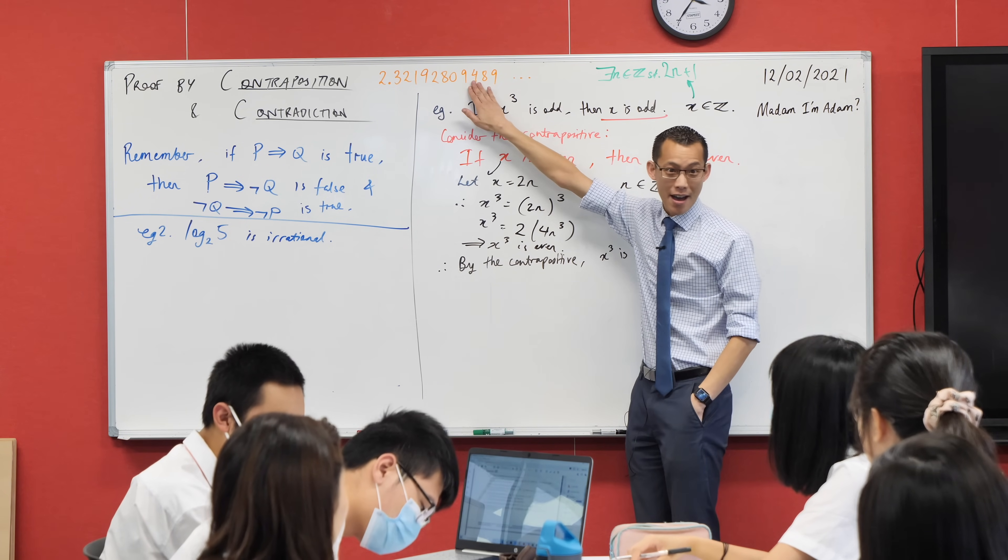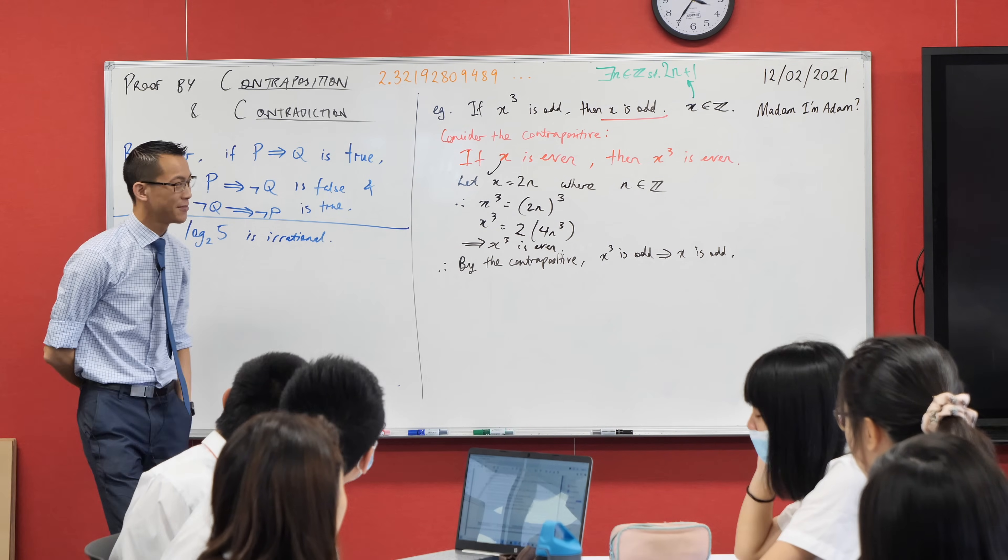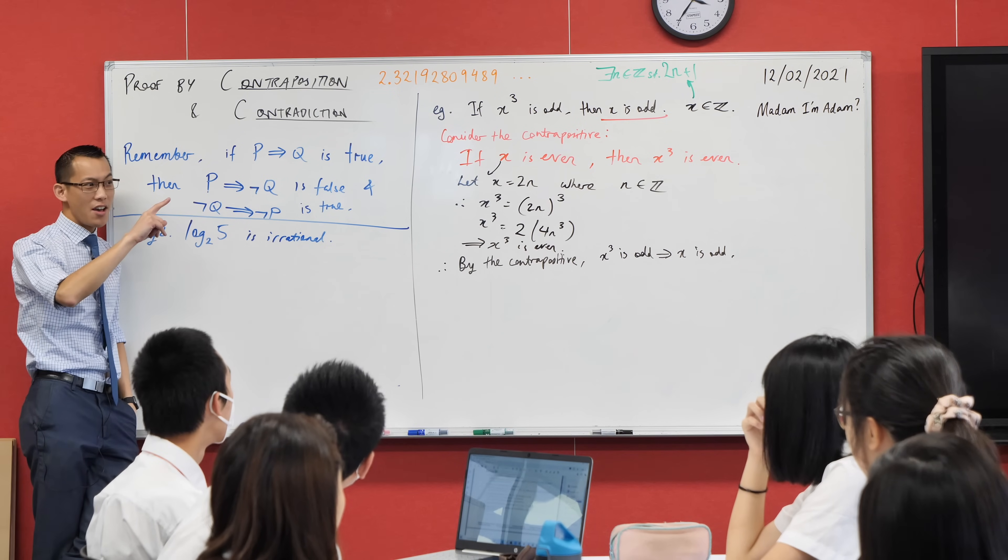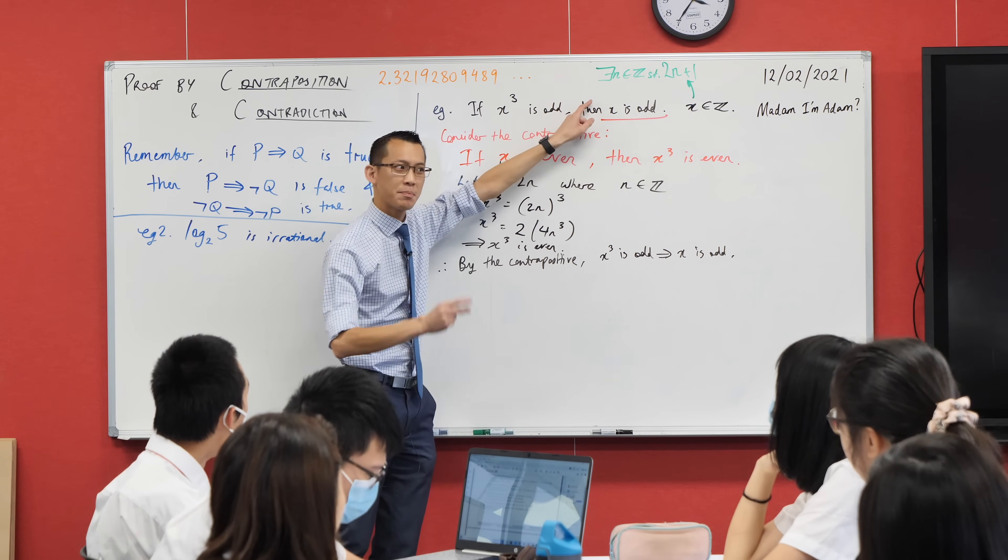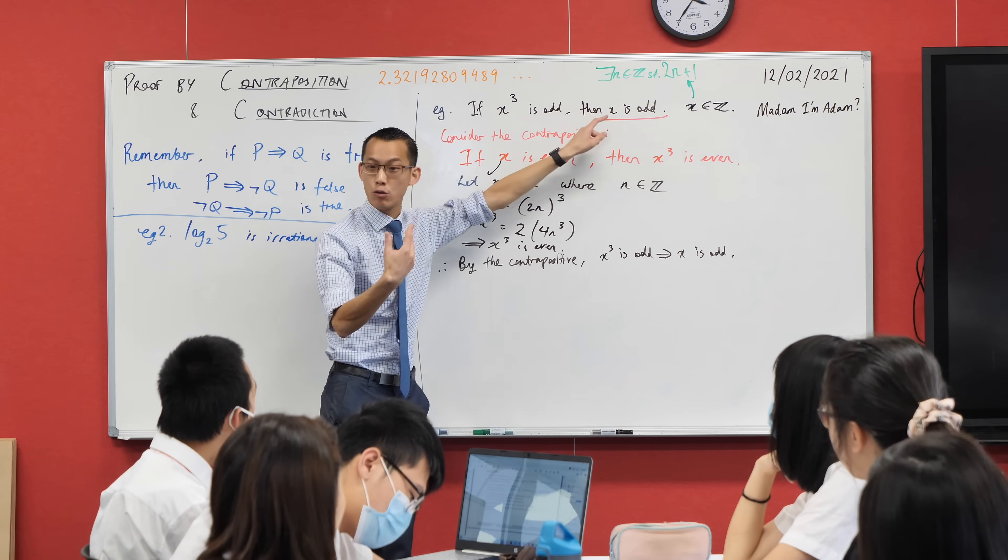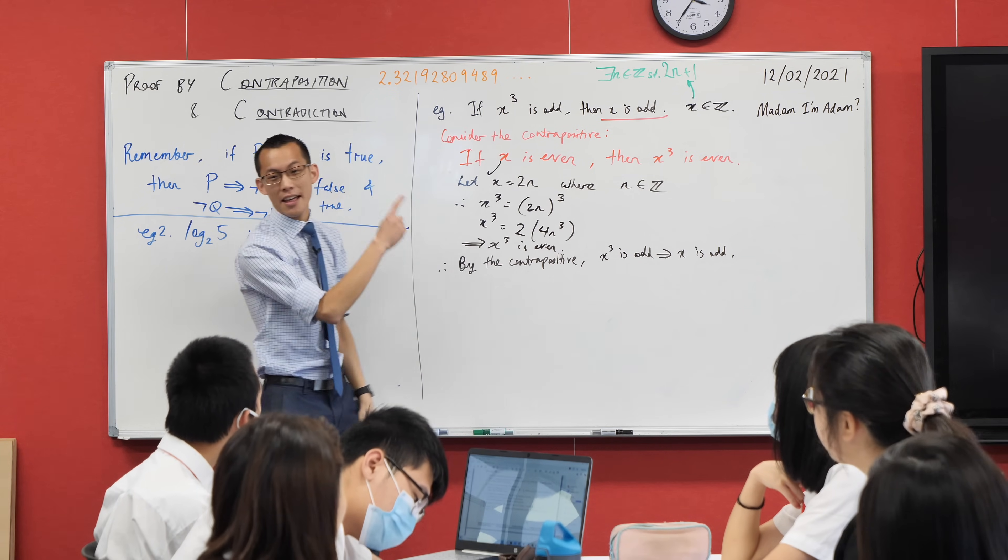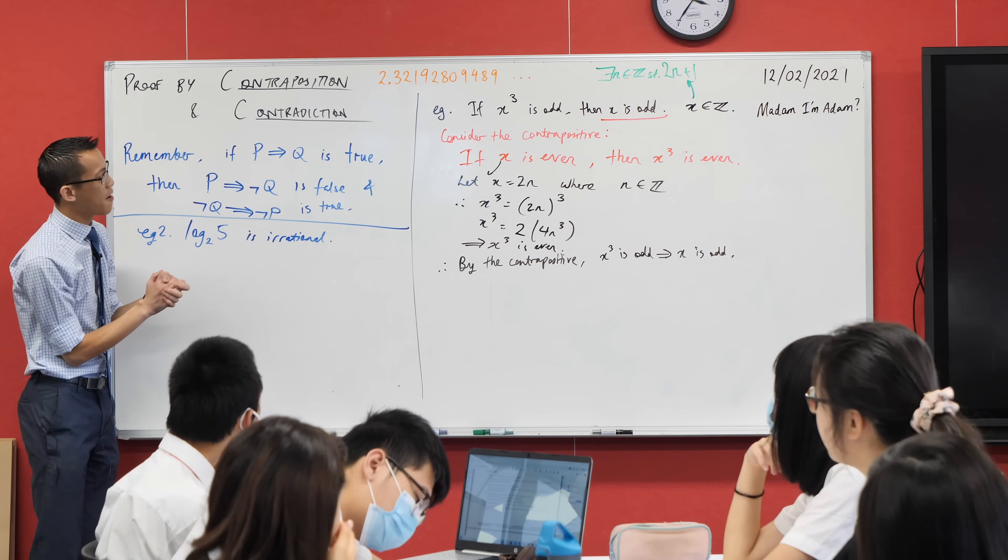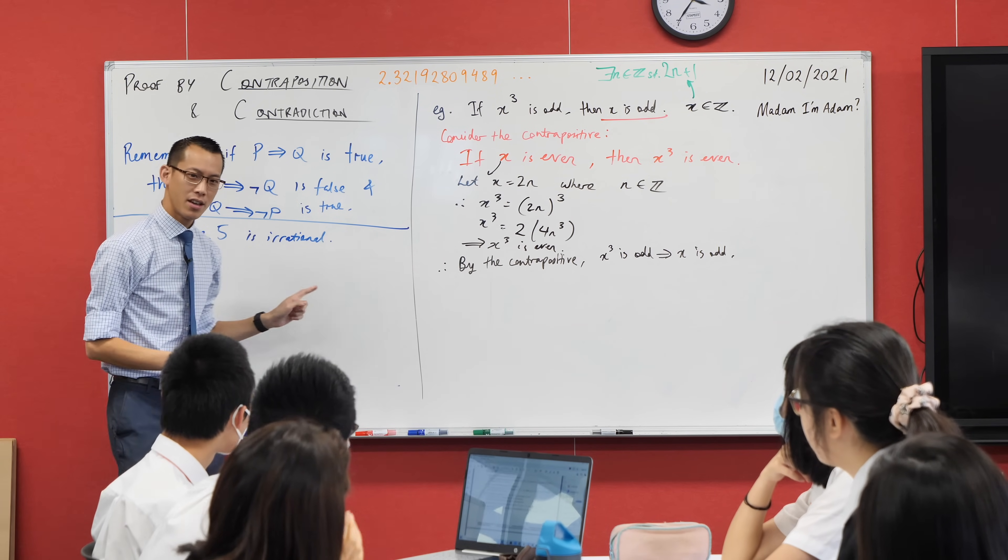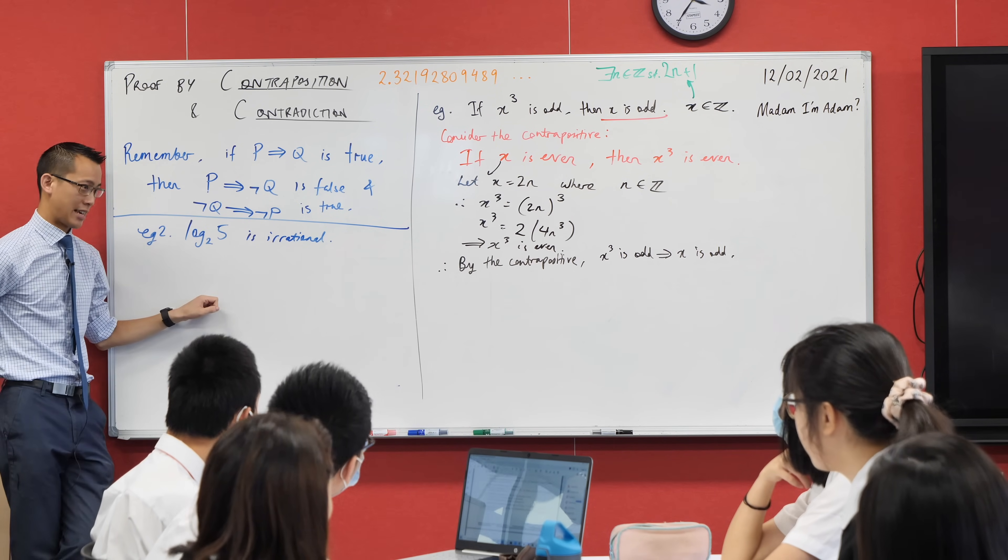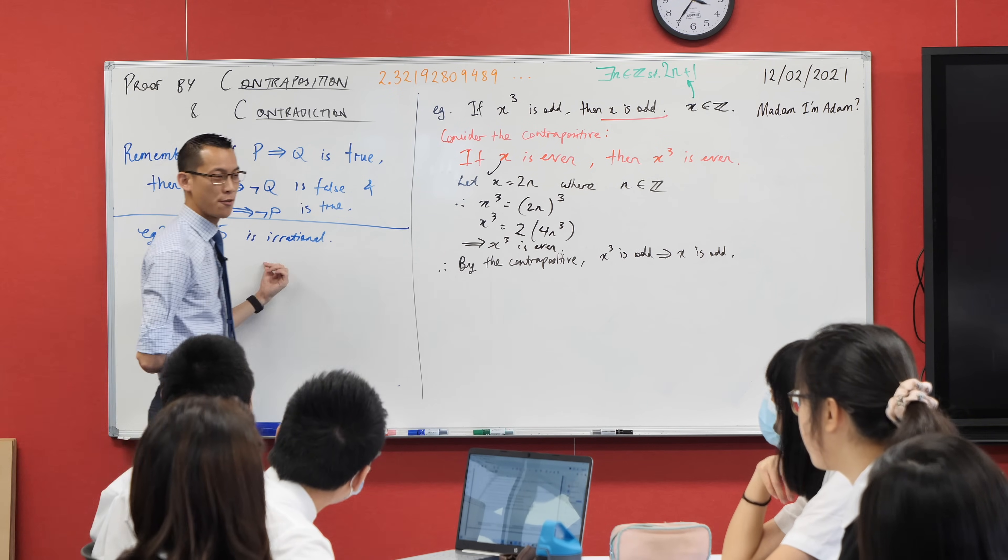Now, this is log base 2 of 5, 2.32192809 and so on. We know that rational numbers can have very long decimal expansions, but eventually they will repeat, or they'll terminate. This does go on forever, but who knows, maybe it just takes a million decimal places and then it starts repeating again. We can prove that that's actually not the case, without going to any number of decimals. That was a spoiler, by the way, you don't need any decimal notation for this.